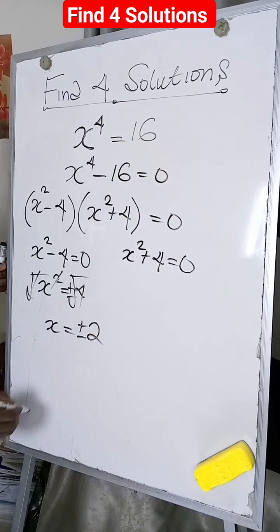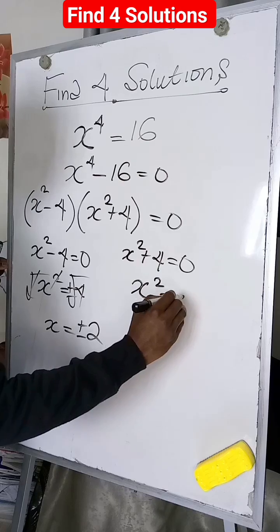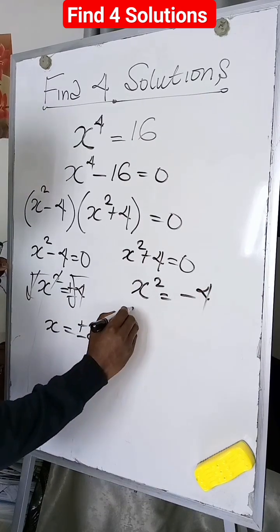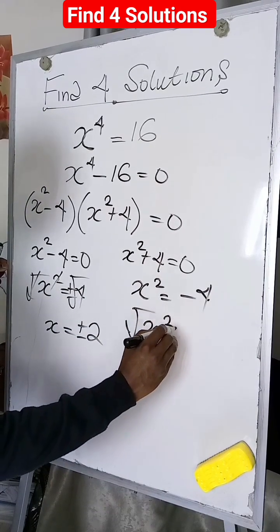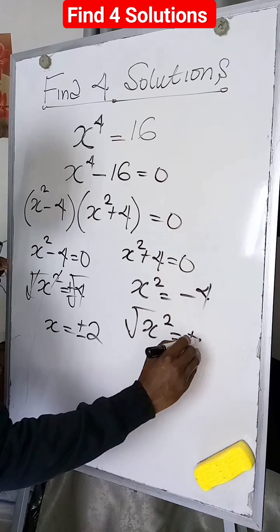For the second equation, x squared will be equal to negative 4. Taking the square root of both sides, we'll have x equal to plus or minus the square root of negative 4.